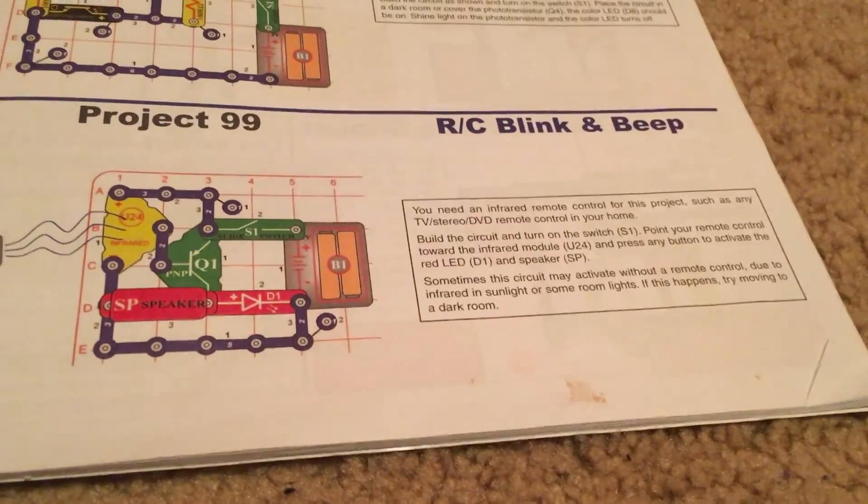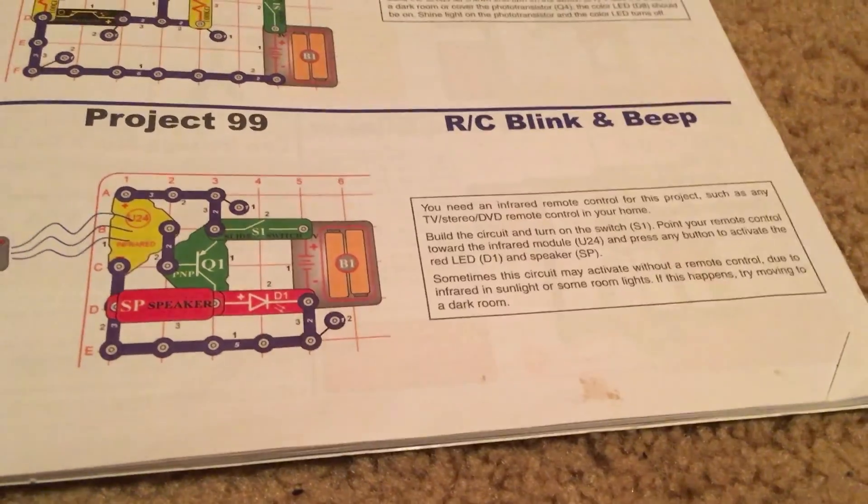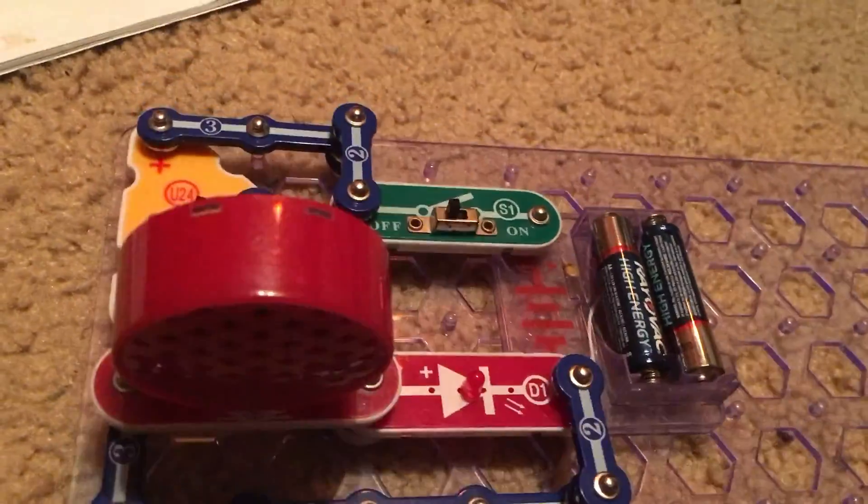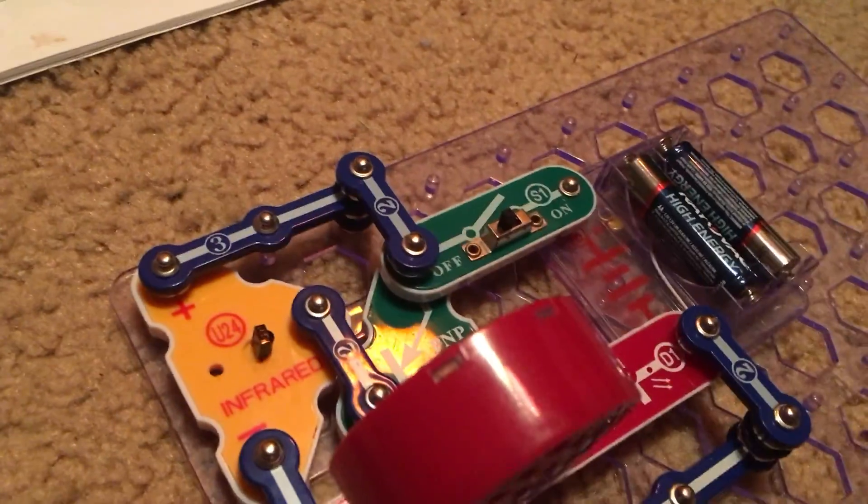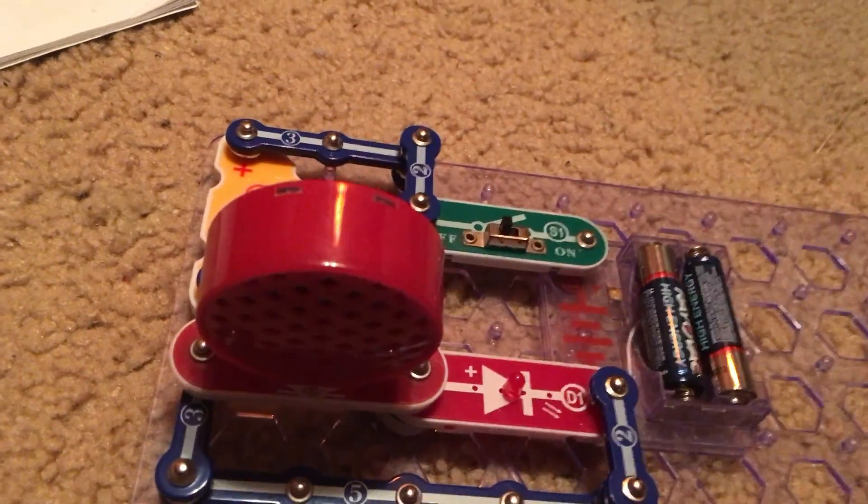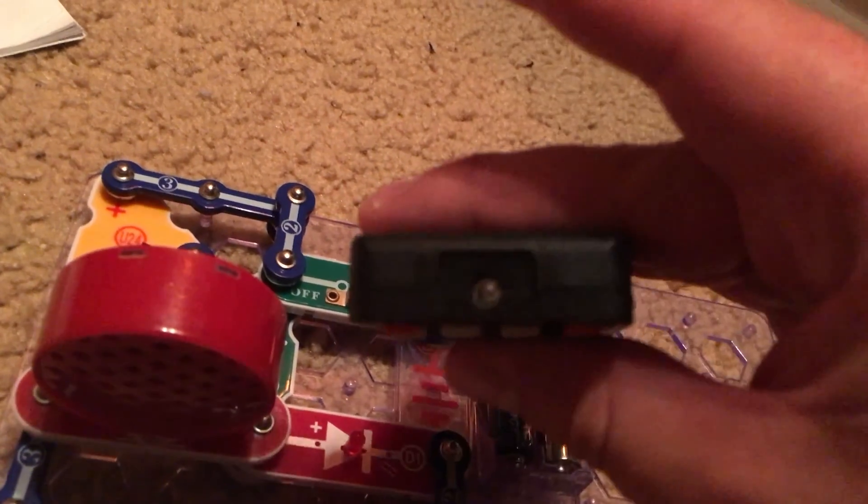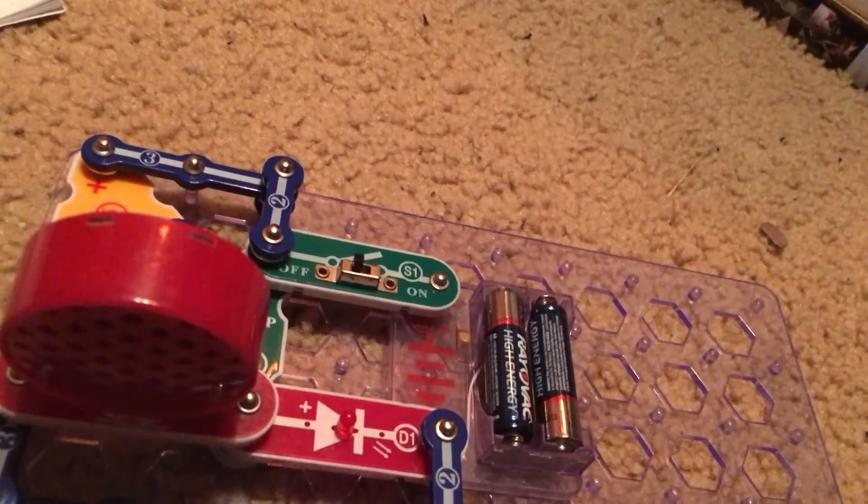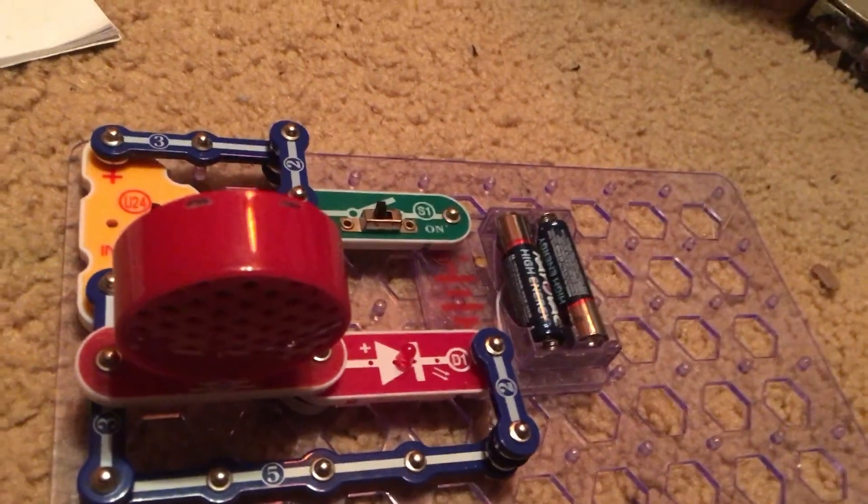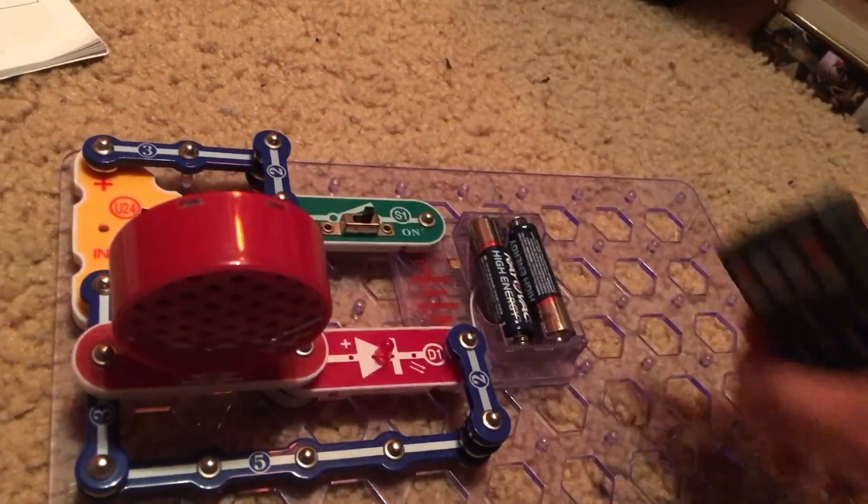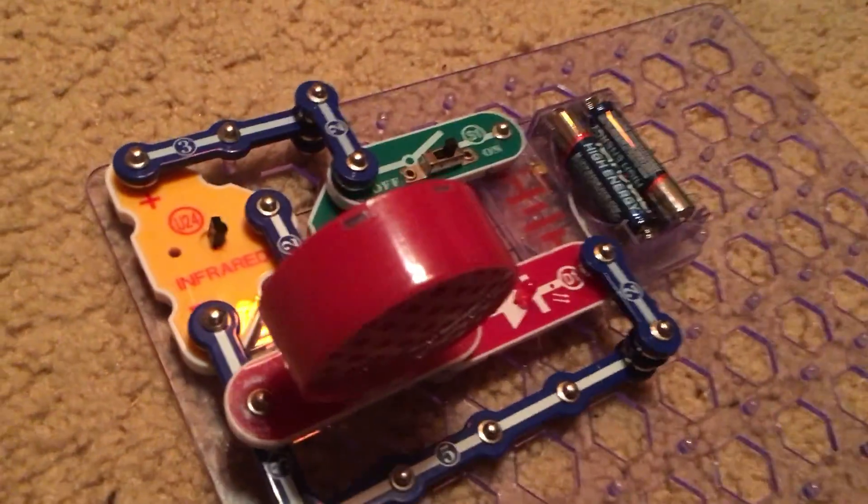99 is RC blink and beep. We have this smaller circuit and we will need a remote control for this project. And you can use any remote control in your home that uses an infrared signal. And you can tell it uses an infrared signal if it has an LED, a clear LED on top on the front end. We will turn on the slide switch and the LED will flash.